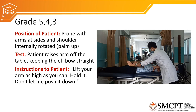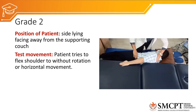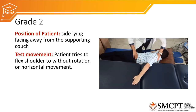For grade 2 shoulder extension, similar to flexion, the patient is in side lying but facing away from the supporting couch, so that the extension movement is supported. The extension is performed in the horizontal plane, as shown in the video.